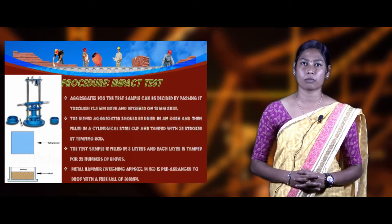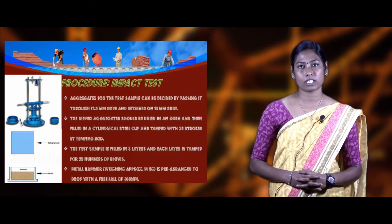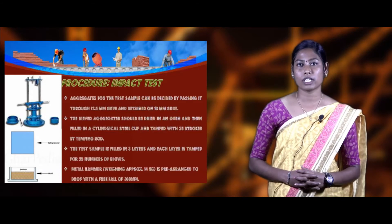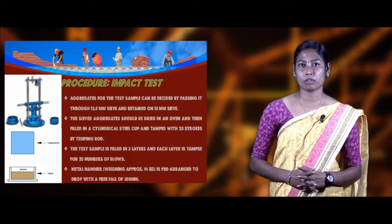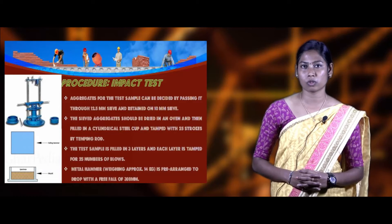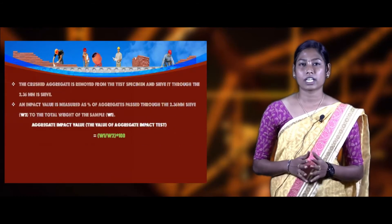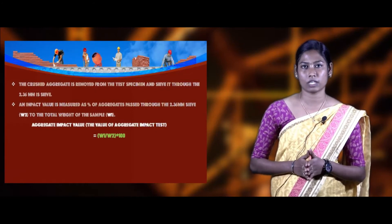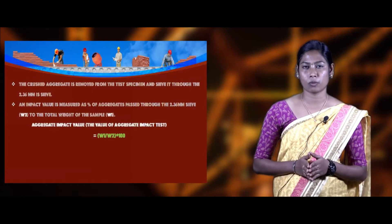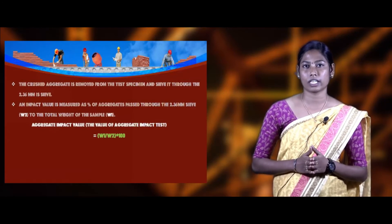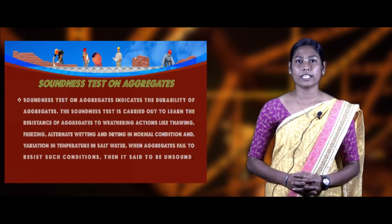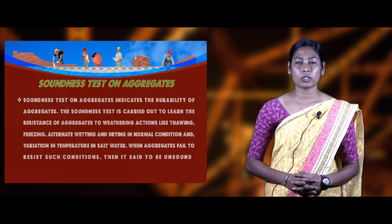Procedure for impact value test: take a sample of aggregates passing through 12.5 mm and retained on 10 mm, weighed as W1. Fill the sample into the cylindrical mold, place the mold into the impact testing machine with the base plate, and administer 15 blows of a metal hammer. After crushing, remove the aggregates from the mold and pass through the 2.36 mm sieve, weighed as W2. The formula to calculate impact value: (W2 / W1) × 100.